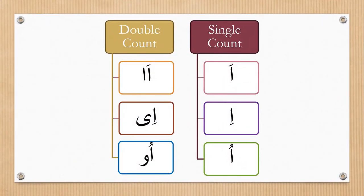We will be focusing on madd as well. So wherever you see a madd, you will be prolonging it for two counts. By one count I mean: a, e, u — that's a single count. A double count would be just doubling that sound: a, e, u.